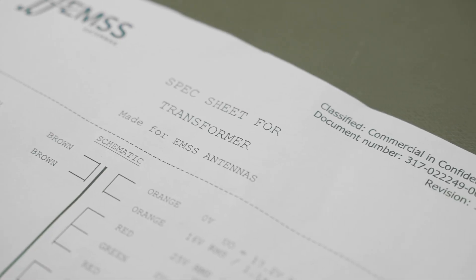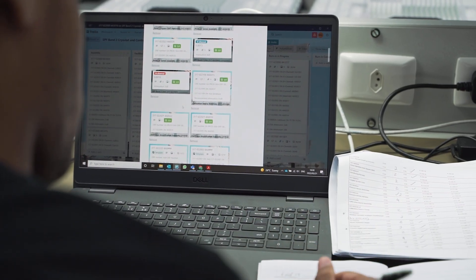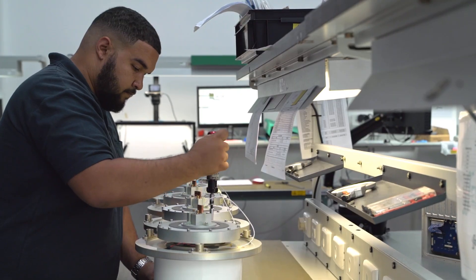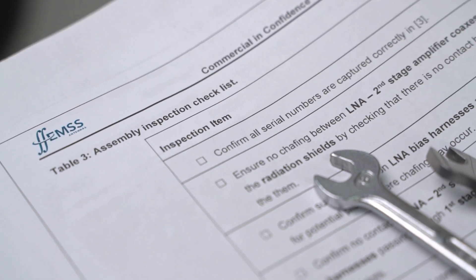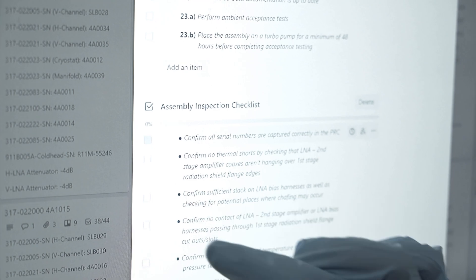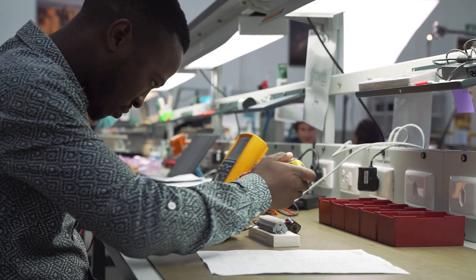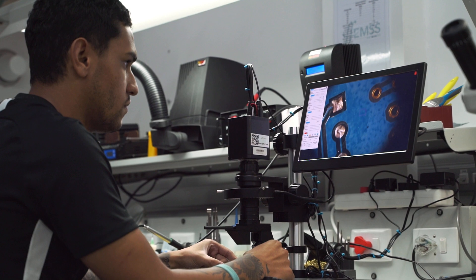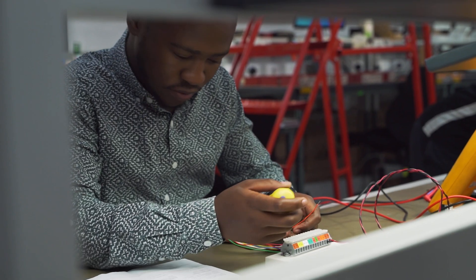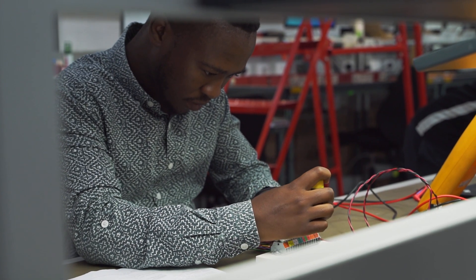Production follows a strict uncompromising process starting with procurement. As individual parts are received a detailed inspection is performed before it is booked into stores as part of the inventory. Each new build order is made out according to the bill of material where all the individual parts are kitted and delivered to the production floor.